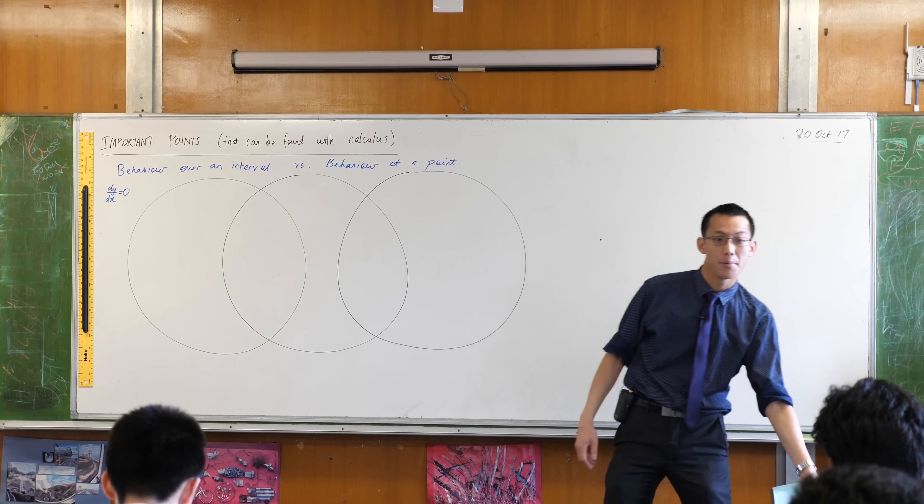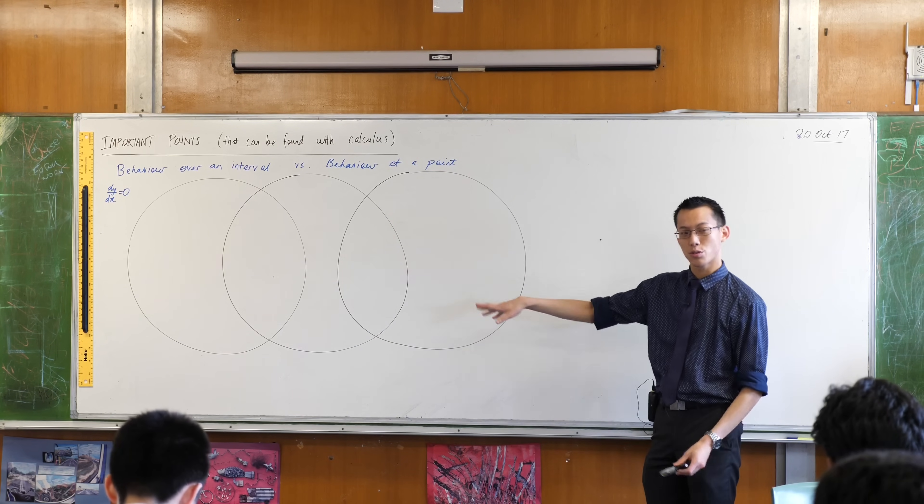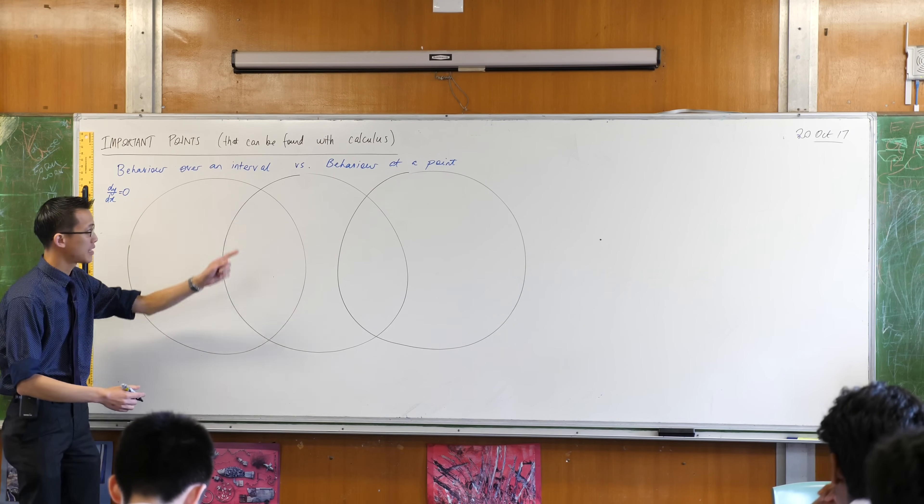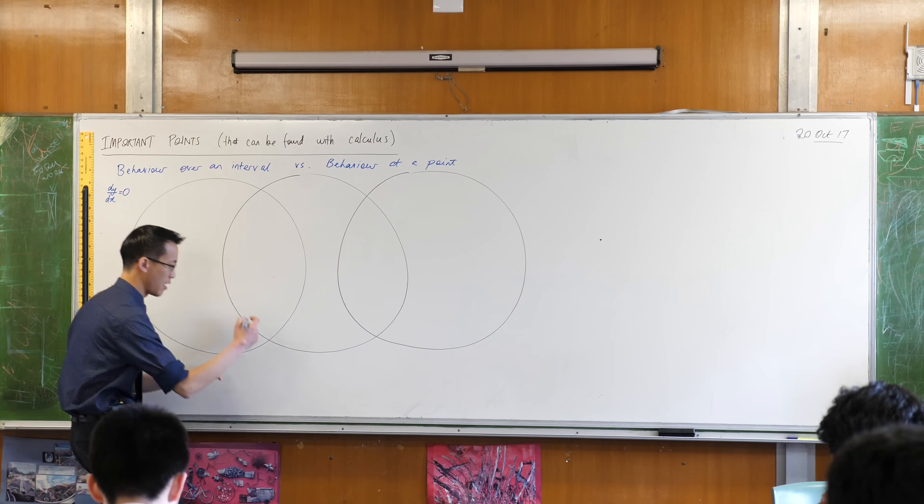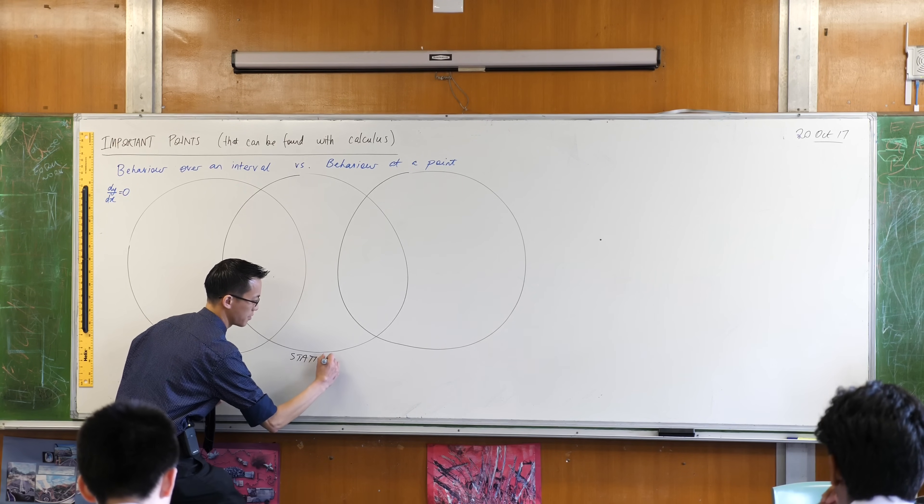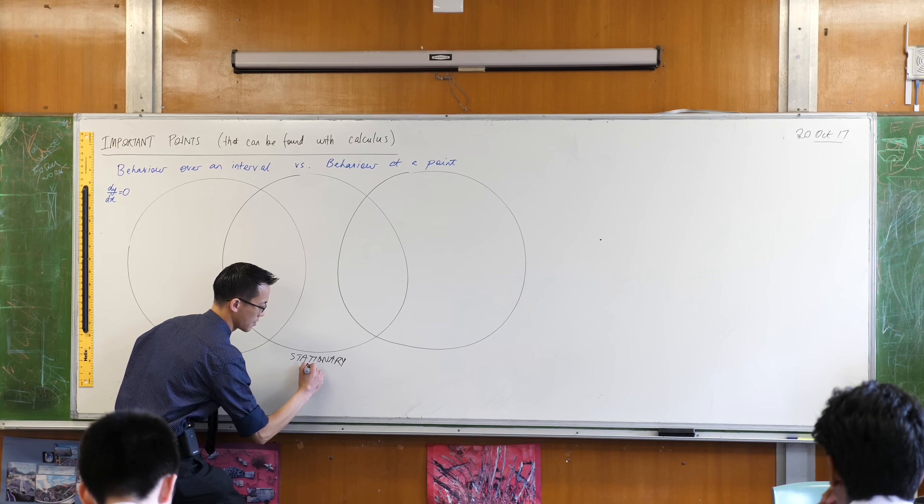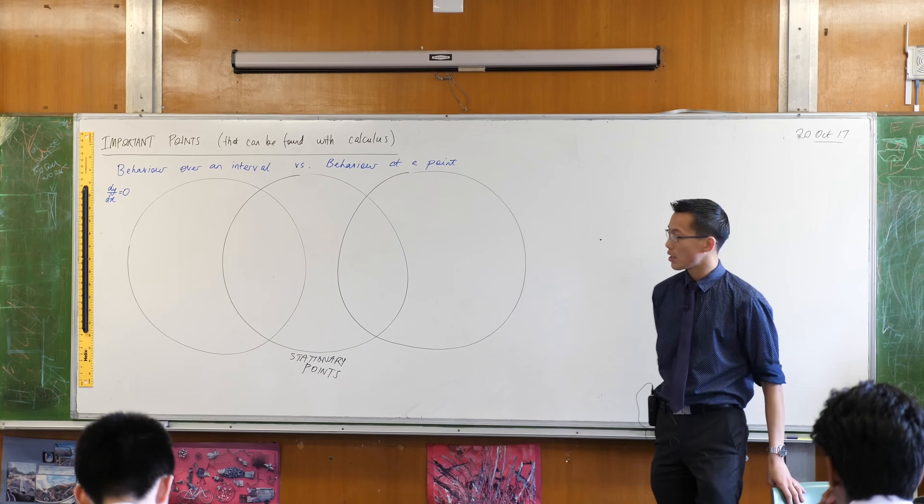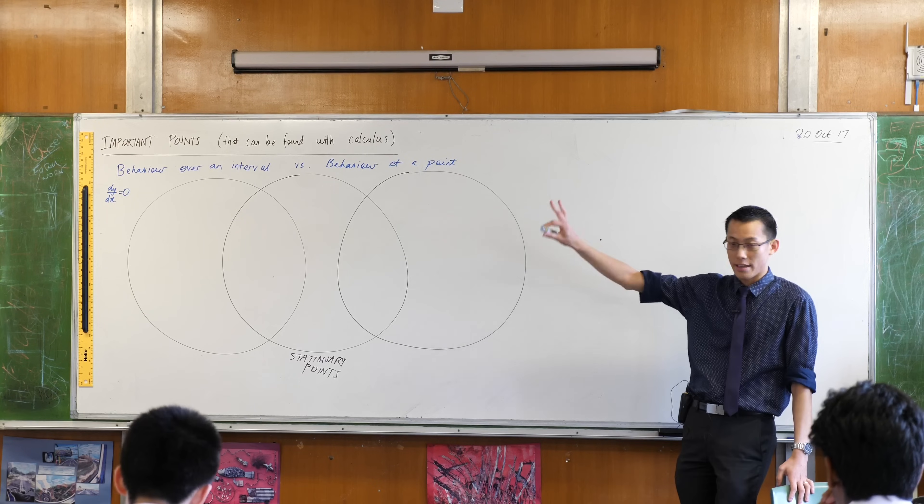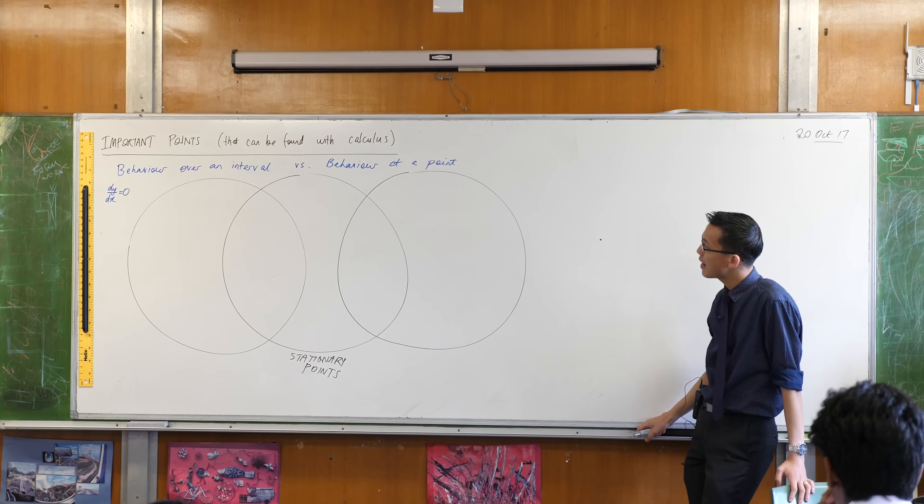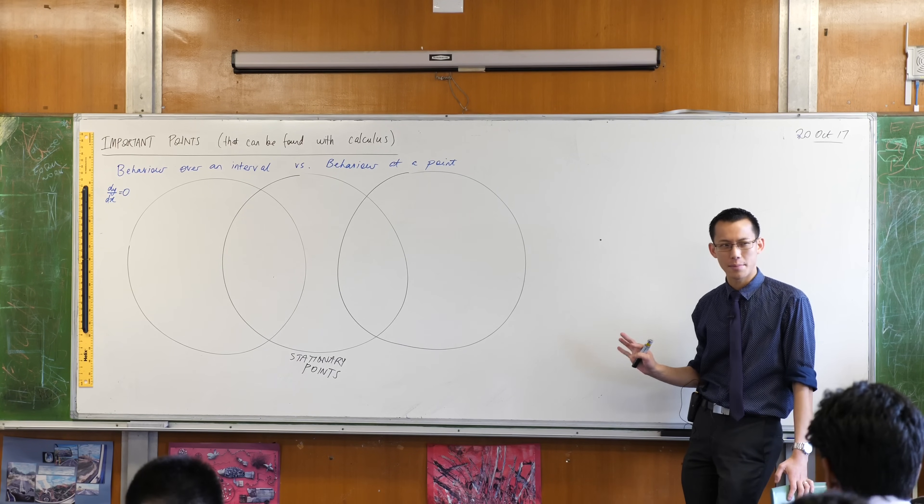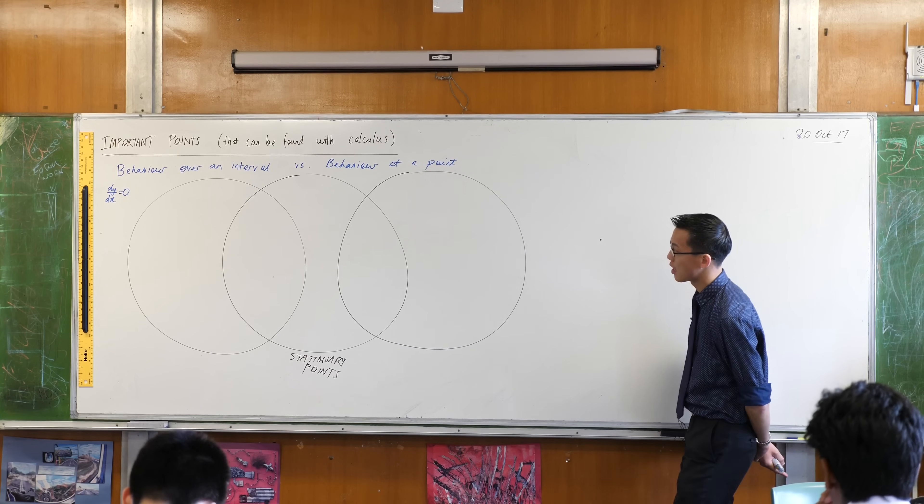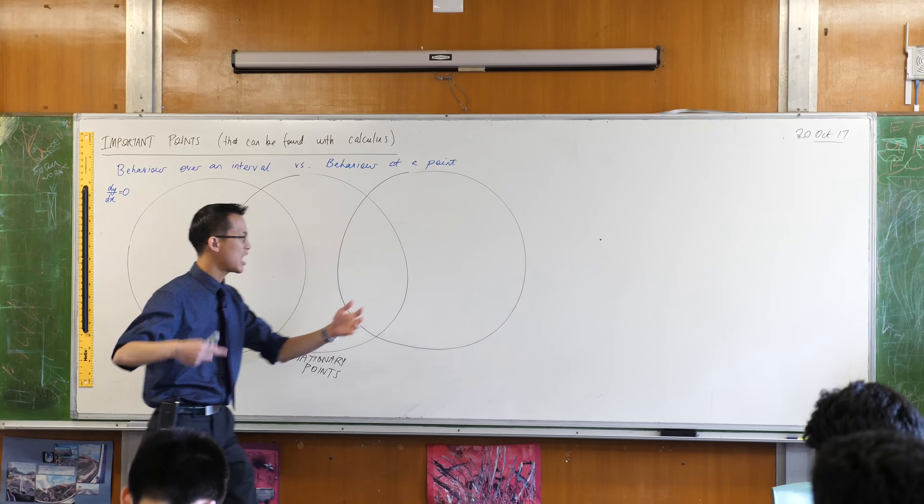We said stationary, right? So this is a very important phrase. We want to talk about these objects called not stationary over an interval but stationary at a point, so unoriginally we call them stationary points. Now there are lots of different kinds of stationary points and that's why there's so much stuff on this diagram. We're not going to fill in this entire diagram today, I'm only going to show you part of it.